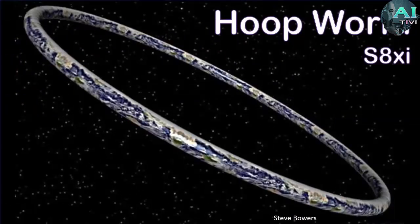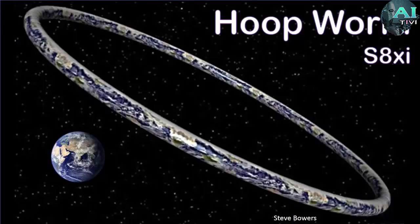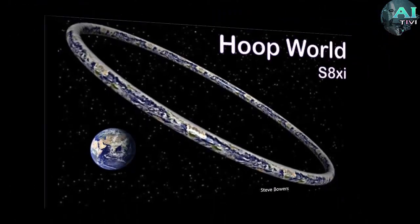Another example would be a hoop world or a torus world, donut world, call it what you would. In this example, you'd have something that was about 10 times the size of Earth. So long as the hoop's diameter is much wider than that of the actual ring itself, you're going to have perfectly normal gravity on the surface.